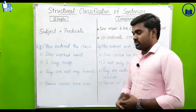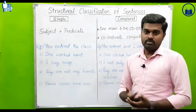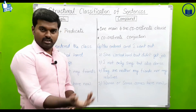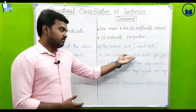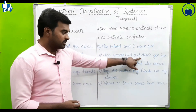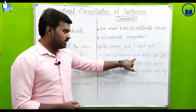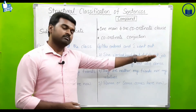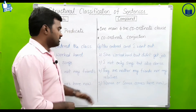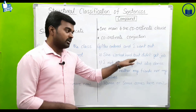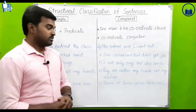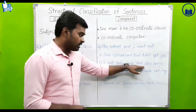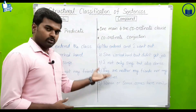Now compound sentence examples. Number two: 'She worked hard but didn't get a job.' Here 'but' is a coordinate conjunction. Number three: 'I not only sing but also dance.' Here 'not only...but also' is the conjunction used to join the two clauses.